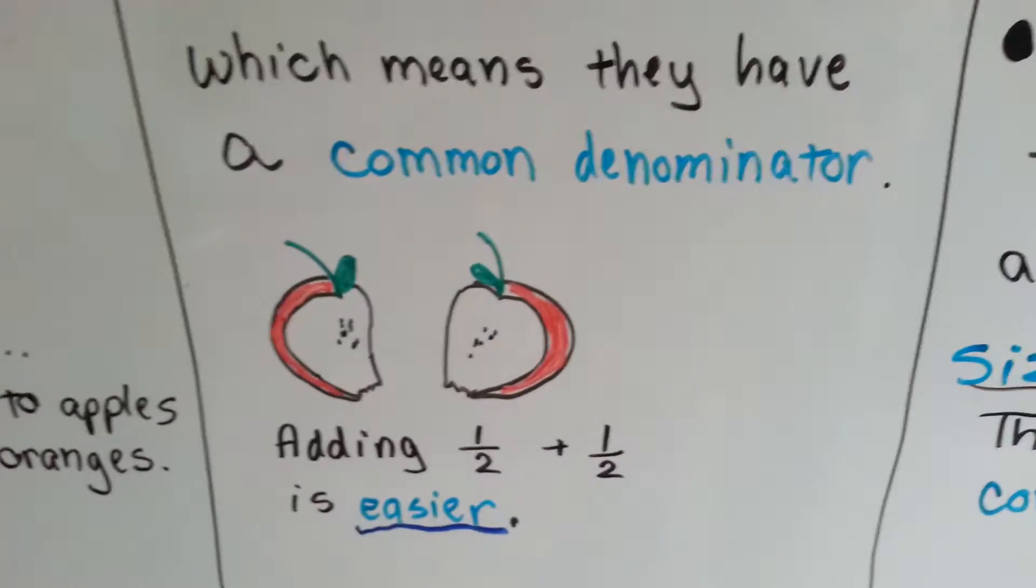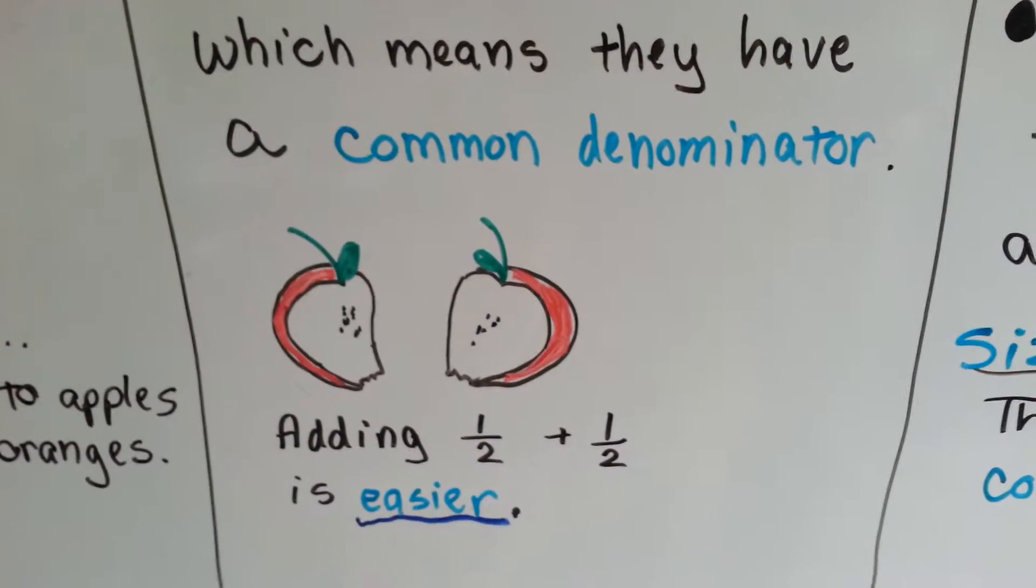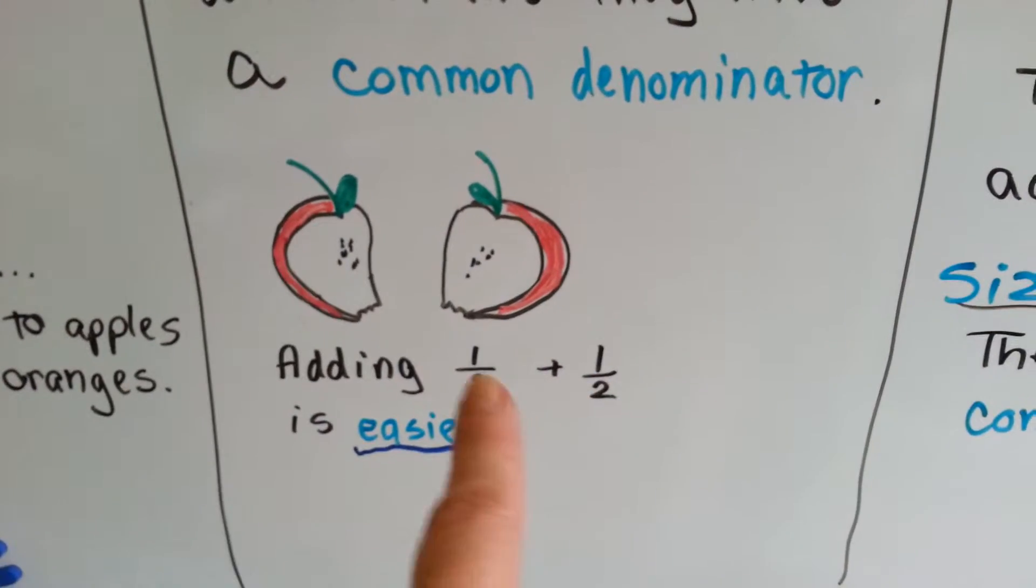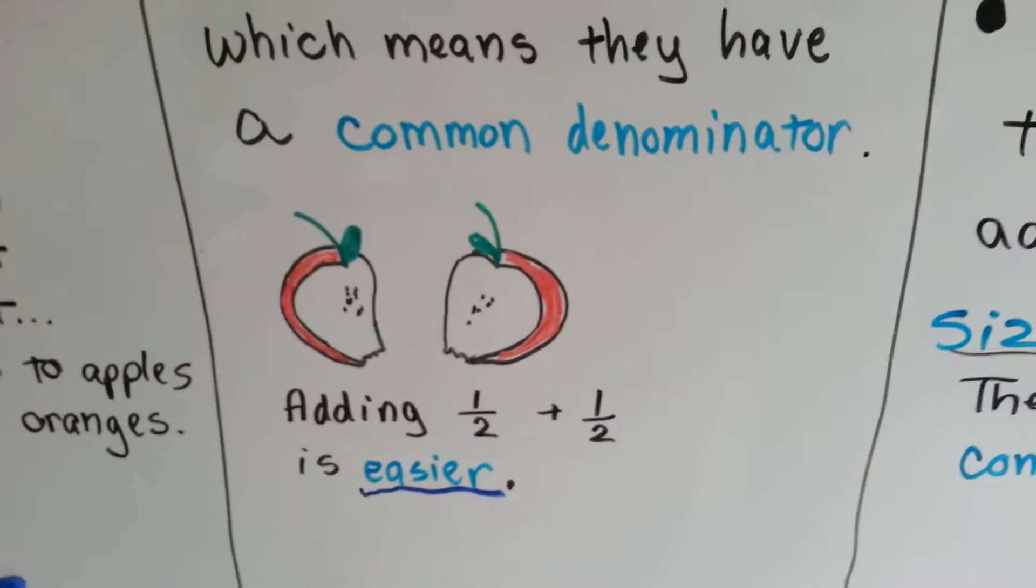So, if you add half of an apple to half of an apple, it's easier. The denominators are the same, and you can just put those two apple halves together.